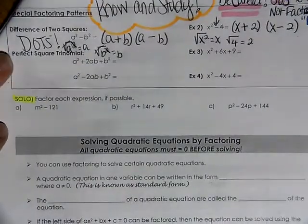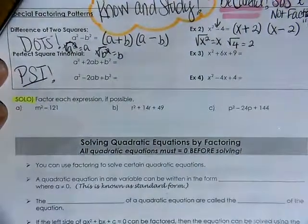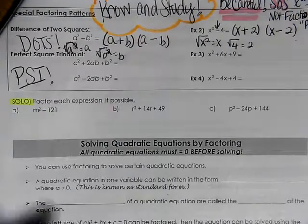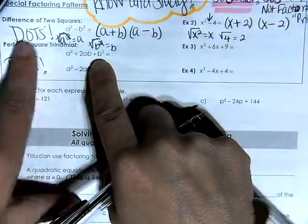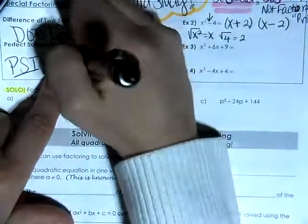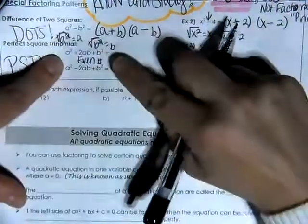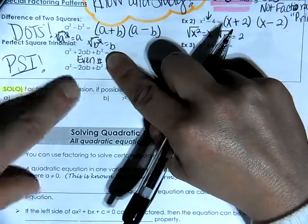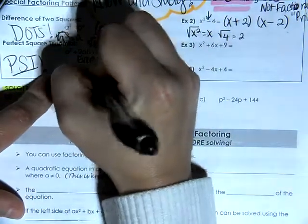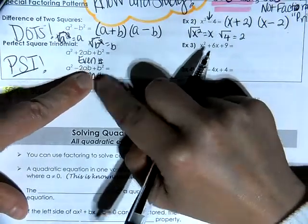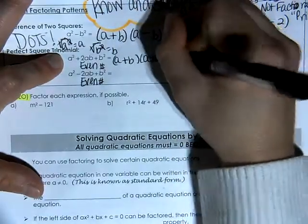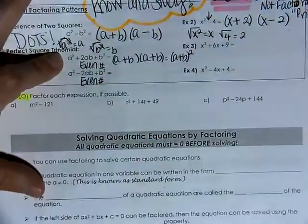The next pattern is called a perfect square trinomial — I call that a PST. If you can keep your eyes peeled for a PST, this is really helpful because it saves you a whole bunch of time. The first term and the last term are going to be perfect squares, just like with DOTS, but the middle term will be an even number.